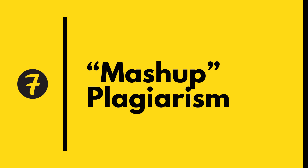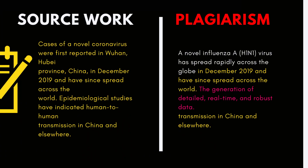In the Mashup type of plagiarism, a person mixes material copied from multiple sources. It simply shows that the student has done some research but has decided not to properly cite the borrowed information. This mashup plagiarism appears in different colors when you take a report from the plagiarism tools.